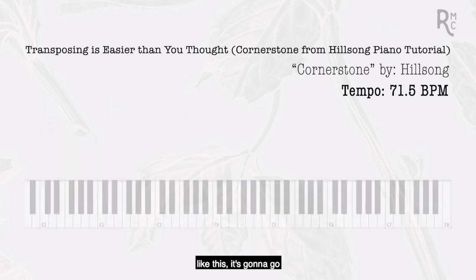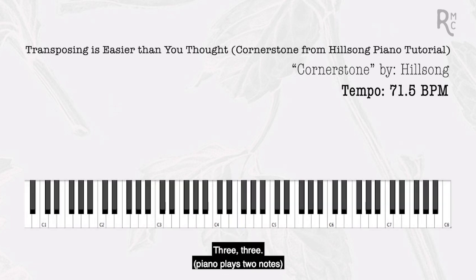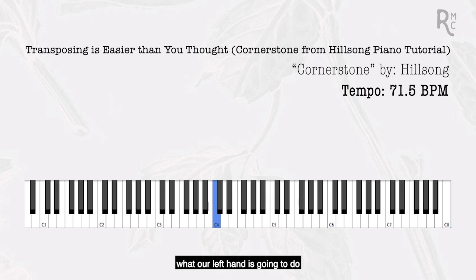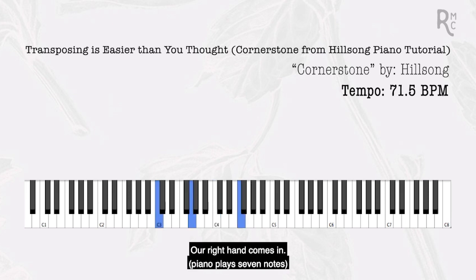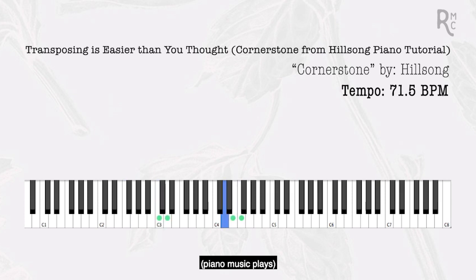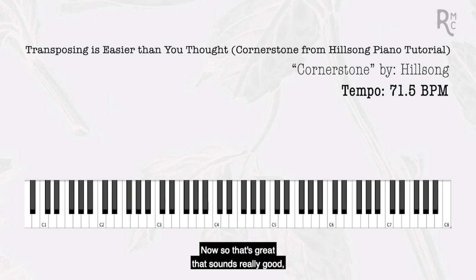The lead line goes: four, four, three, three, two, two, one — those notes come from the C major scale we just learned. When you pair that with the left hand — which plays each chord just before the lead line comes in — the full intro sounds like this: one chord, lead line, one chord, lead line, six chord, four chord, and five. That's the entire intro in the key of C.